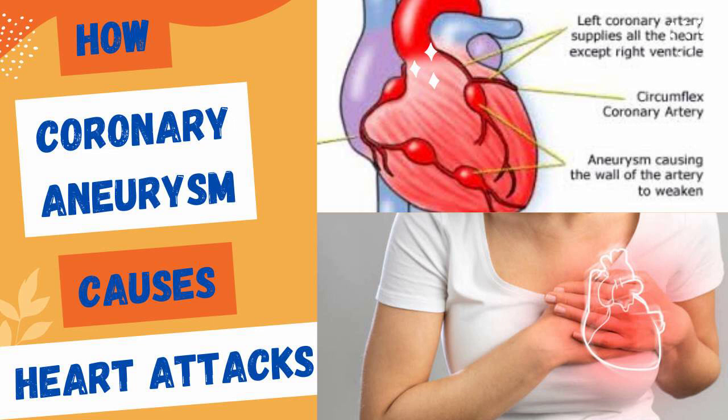3. Blood Clot Formation and Occlusion. Coronary anomalies, particularly when combined with the presence of aneurysms, can create an environment conducive to blood clot formation. Aneurysms can disrupt the normal flow of blood, causing sluggish or turbulent blood flow. This altered flow pattern can lead to the formation of blood clots within the aneurysmal segments of the coronary arteries. If a blood clot completely blocks the artery, it can result in a sudden reduction or cessation of blood flow to the heart muscle, causing myocardial infarction.